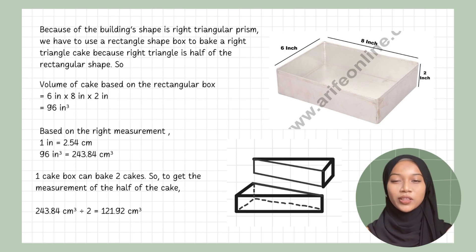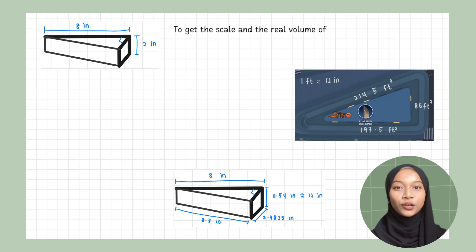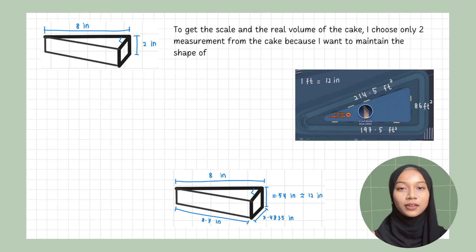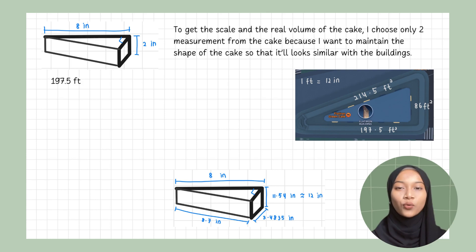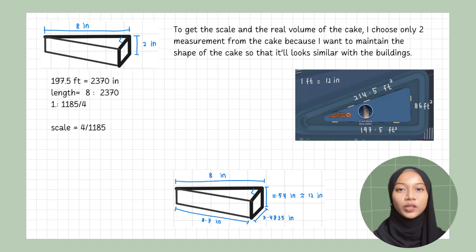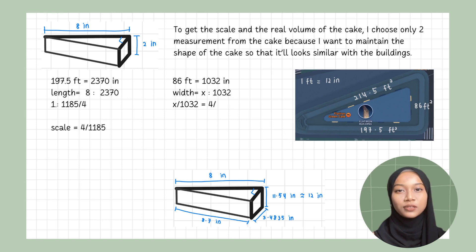To get the measurement of half the cake, we divide by 2, which equals 221.92 cubic centimeters. To get the scale, I chose 2 measurements from the cake to maintain the shape so it looks similar to the building. For the length, 197.5 feet equals 2370 inches, so the ratio is 8 to 2370. Simplifying gives 1 to 1185 over 4, so the scale is 4 over 1185. We then find the other dimensions by multiplying all sides of the building by the scale. For the width, after multiplying by the scale, we get 3.48 inches. For the height, after multiplying by the scale, we get 11.54 inches, rounded to 12 inches.